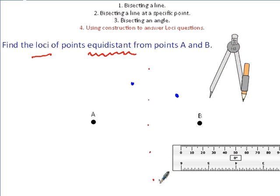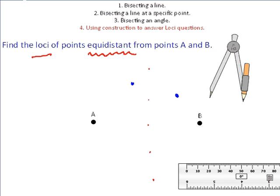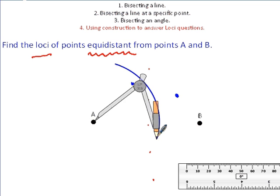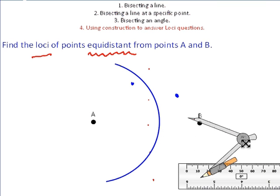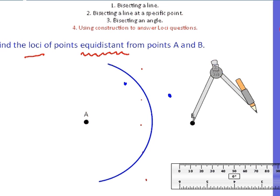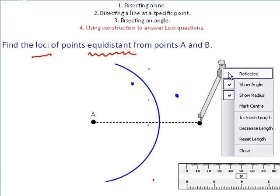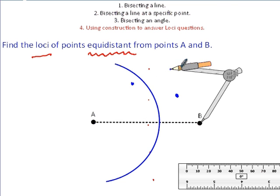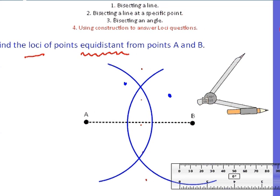Open the compass to more than halfway between the two points and draw an arc. If you're finding it hard to visualise, we can draw the line in so you can see what it is we're actually bisecting. Go to the other end, and again — really, really important — don't change the distance between the pencil and the needle. Draw another arc all the way around, then join that up with your ruler and pencil. This line here is the loci of the points equidistant from A and B.